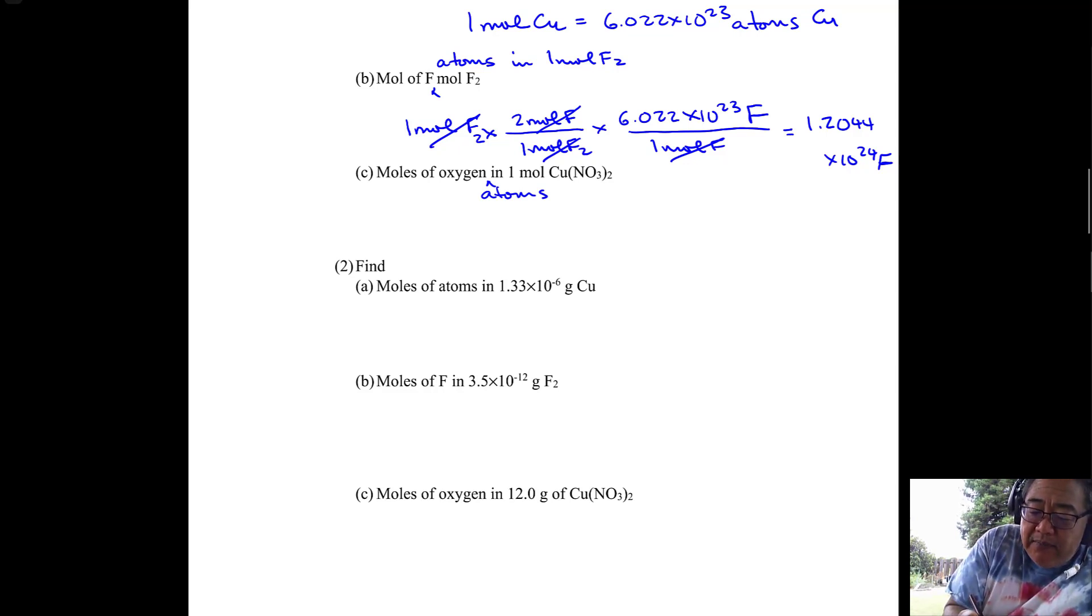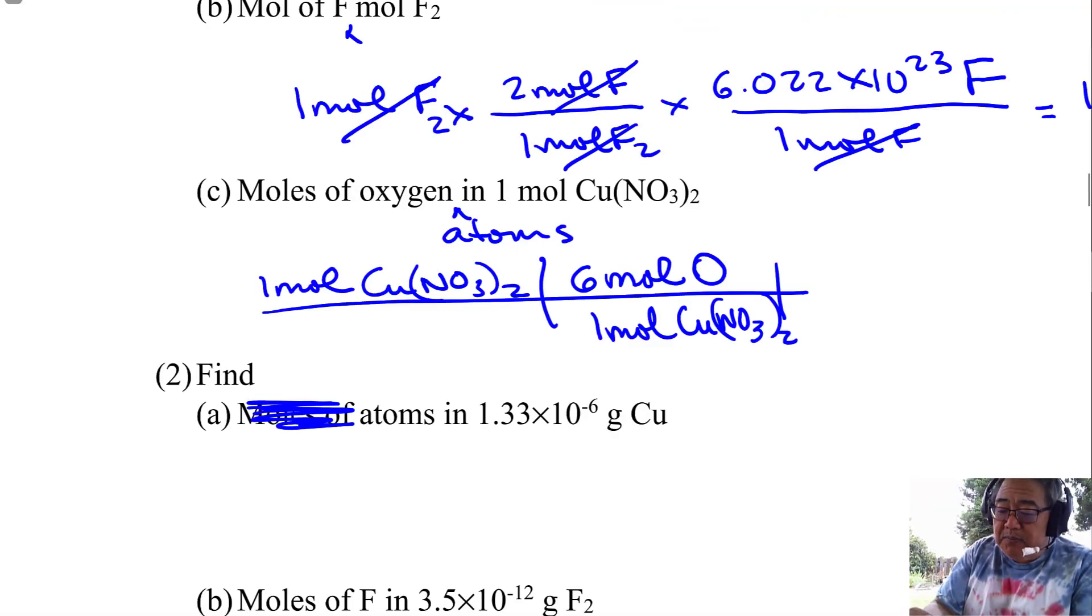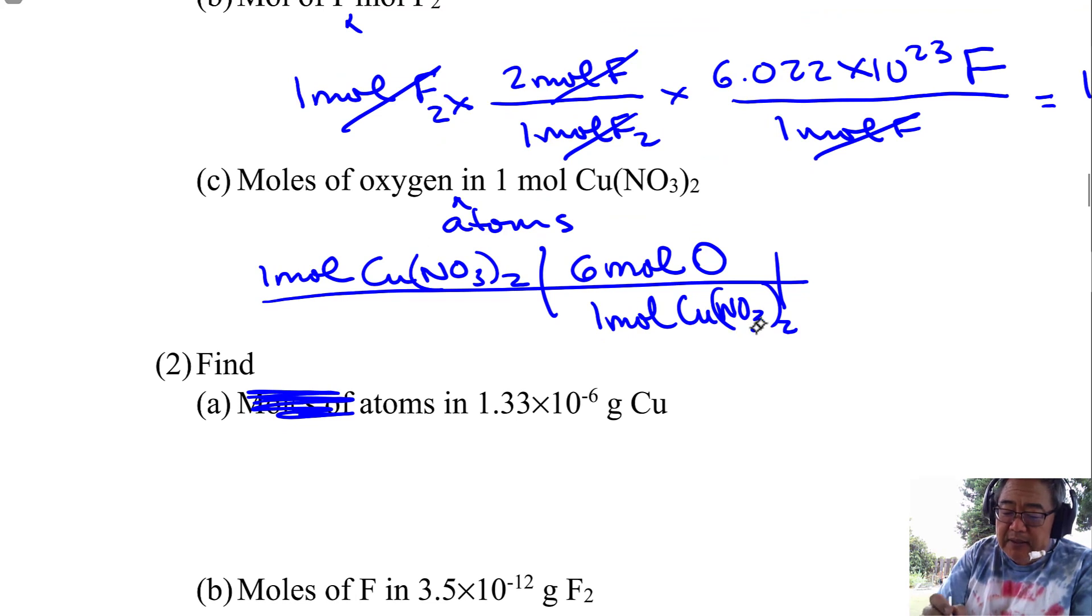So how many moles of oxygen atoms are in copper nitrate, copper 2 nitrate? And so what you need to do is say I have one mole of Cu(NO3)2. And then what you need to do is find the mole ratio between oxygen and copper 2 nitrate. So I'm going to stop the video and when we start, I'll have the number there. But you try and pause and you try to figure out what that number is.